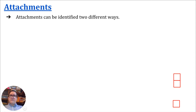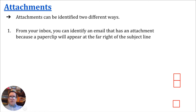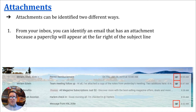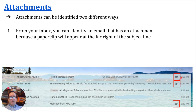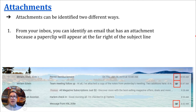Attachments can be identified in two different ways. One of those ways is from your inbox. You can identify that an email has an attachment because you'll see a paper clip at the far right side of the subject line. So you'll see over here my sample email inbox — this line here has an email with an attachment. I know that before opening the email because I see the paper clip symbol there. The second email on the list also has an attachment, and the last one you can see down here. These other two emails do not have files attached because there's no paper clip. So you know before opening your email if it has an attachment or not.